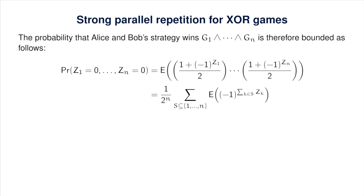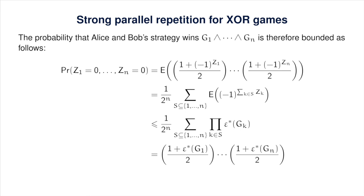Expanding this product using linearity of expectation yields a sum of expected values of (−1) raised to sums over subsets, each bounded by the product of biases for the corresponding subset. Expressing this in reverse, the sum factors as a product that evaluates to the product of the entangled values of G₁ through Gₙ. This proves the entangled value of the AND is at most the product of the values; combined with the reverse inequality, the entangled value of the AND of G₁ through Gₙ equals the product of their entangled values.